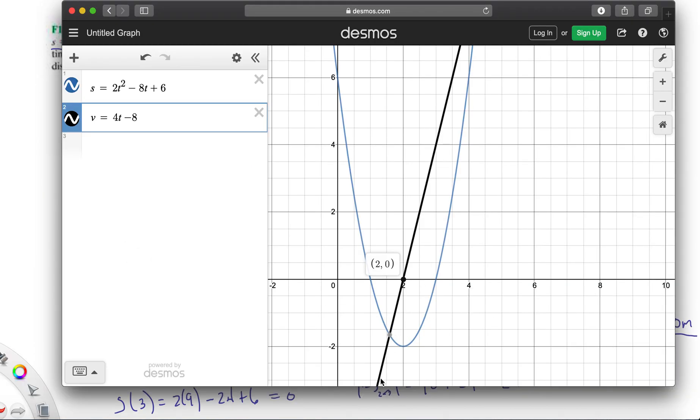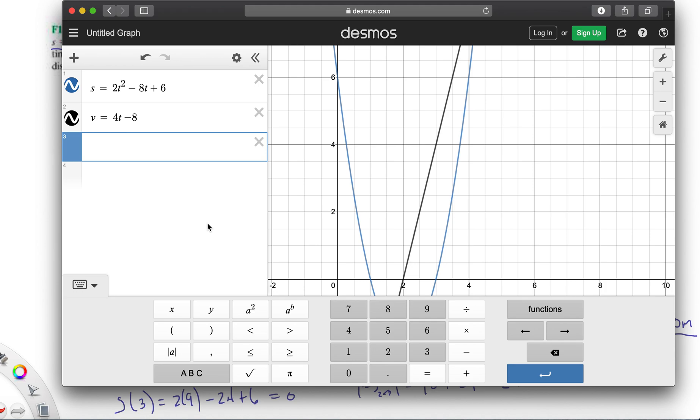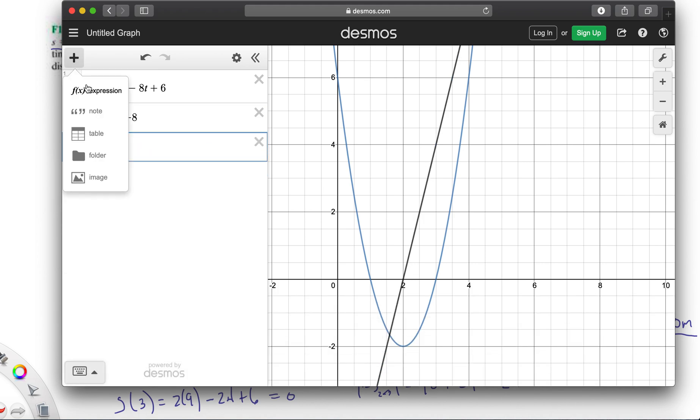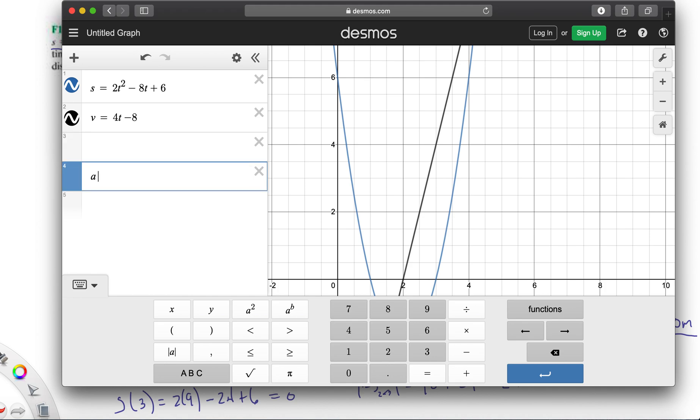Just make sure you're understanding this - you have a parabola function for your position, you have a linear function for velocity, and if we were to do another derivative for acceleration, it would just be 4. Let's just add another expression here, so a equals 4.